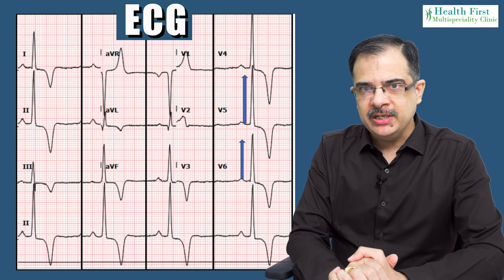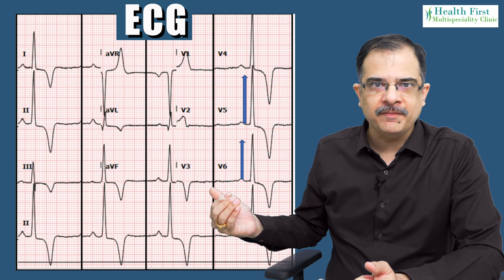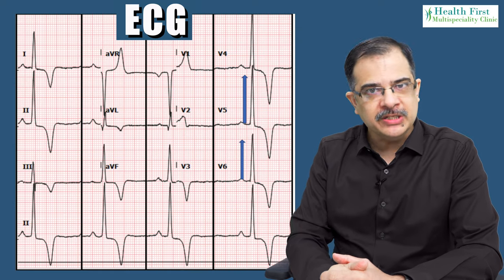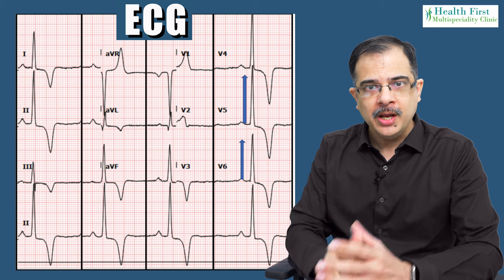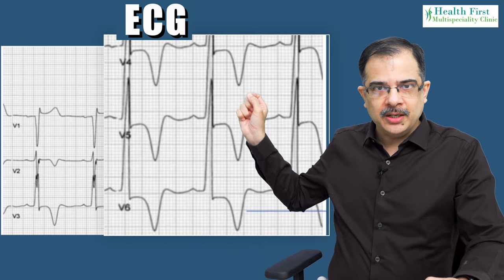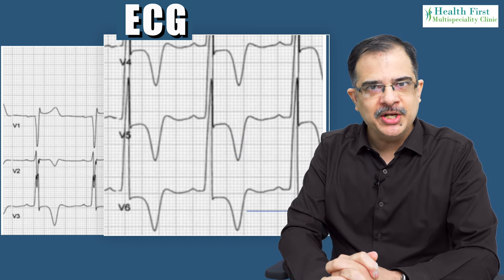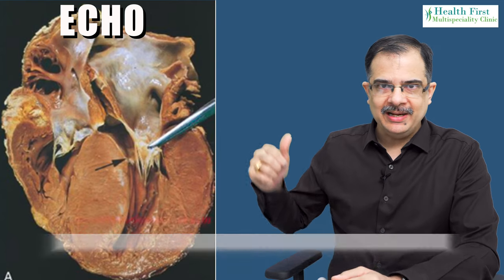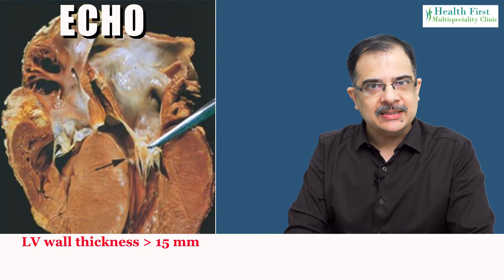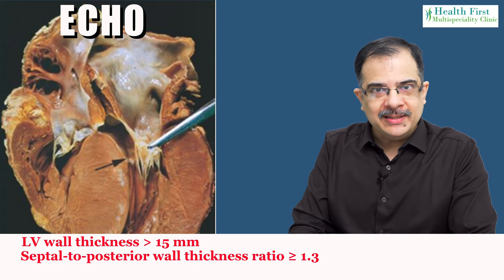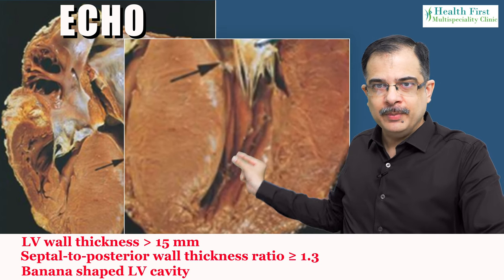On ECG, we will see signs of left ventricular hypertrophy — increased amplitude of QRS complexes in V5 and V6 — as well as signs of ischemia with T wave inversion. Giant inverted T waves more than 10 mm can be seen in the apical variant of HOCM known as Yamaguchi syndrome. On echocardiography, left ventricular wall thickness will be more than 15 mm, the septum to posterior wall thickness ratio — the most important diagnostic criterion — will be more than 1.3, and a banana-shaped left ventricular cavity is seen due to septal bulging.